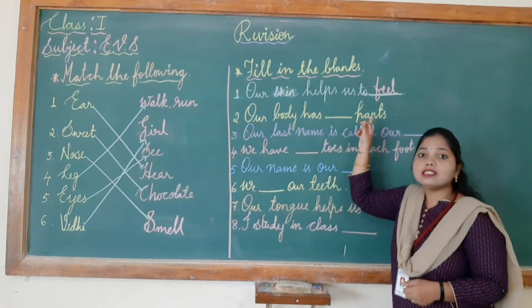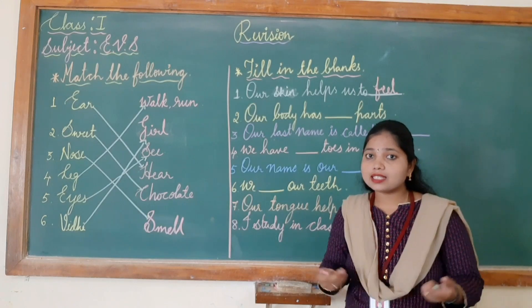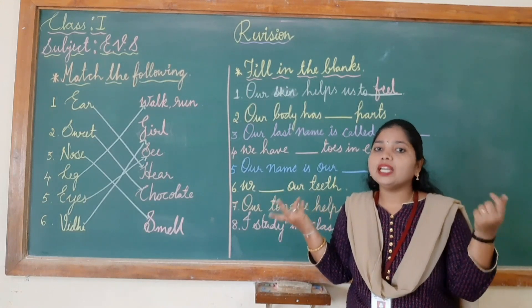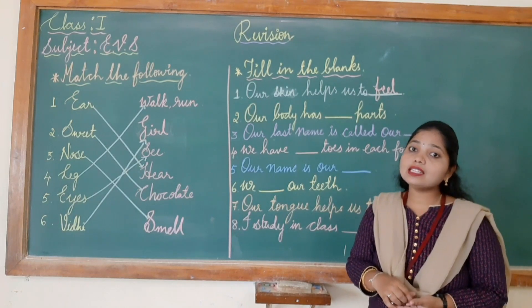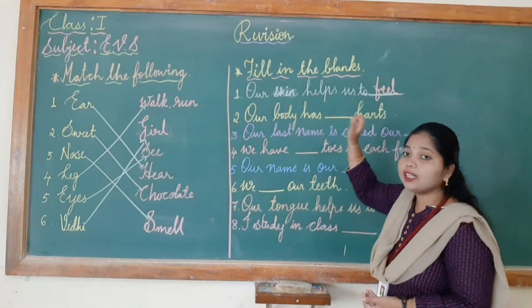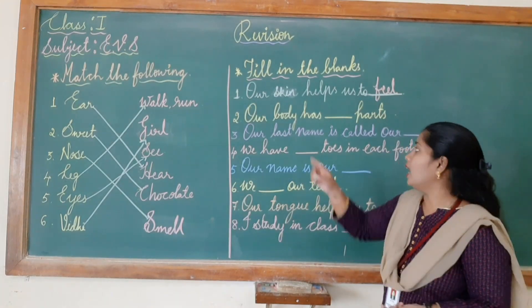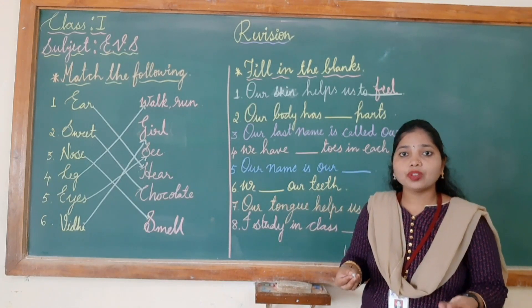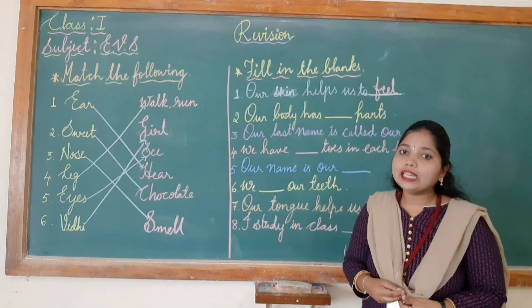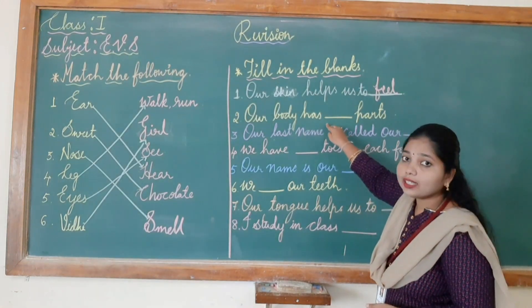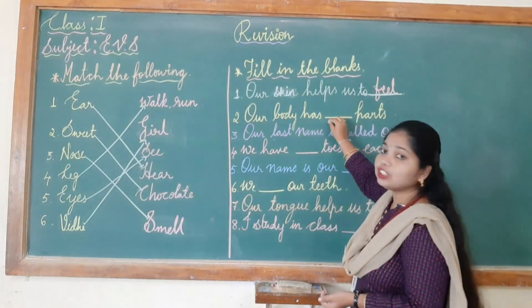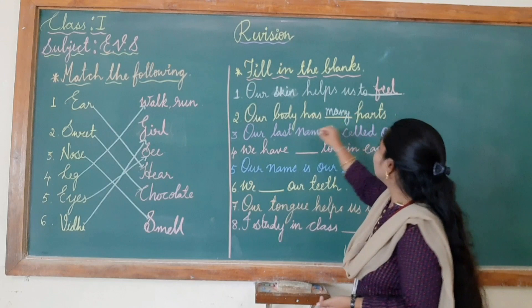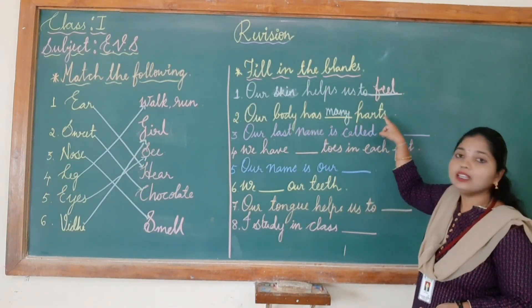Next: our body has dash parts. Children, our body has many parts — such as eyes, nose, head, tongue, skin, leg. So what I should write here? I will write 'many'. Many is spelled M-A-N-Y. Our body has many parts.